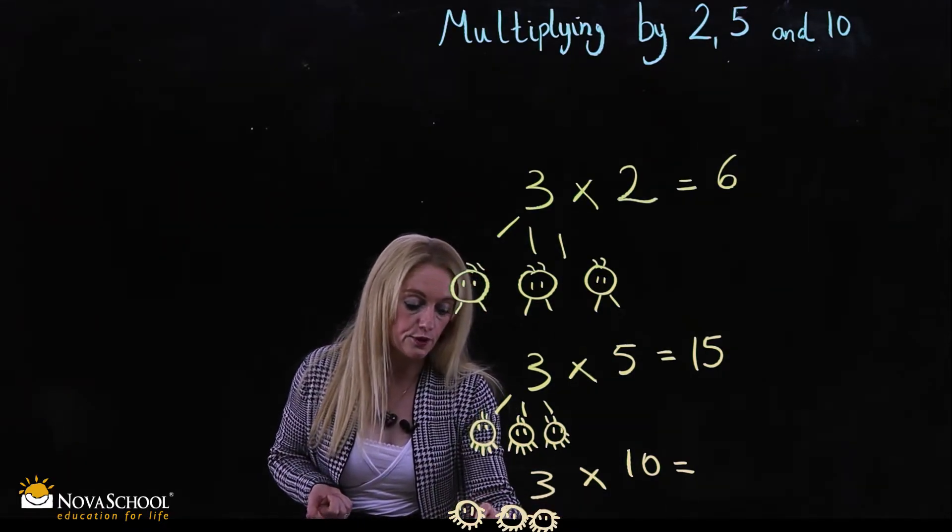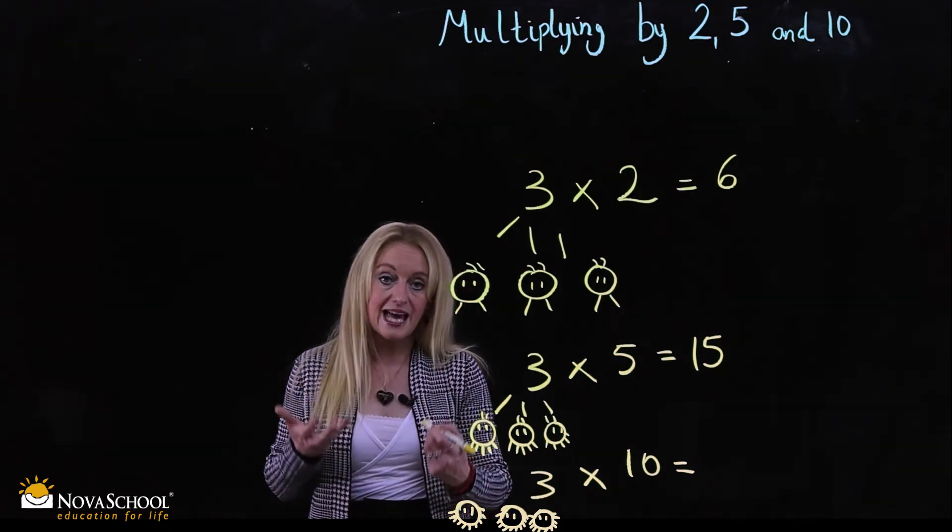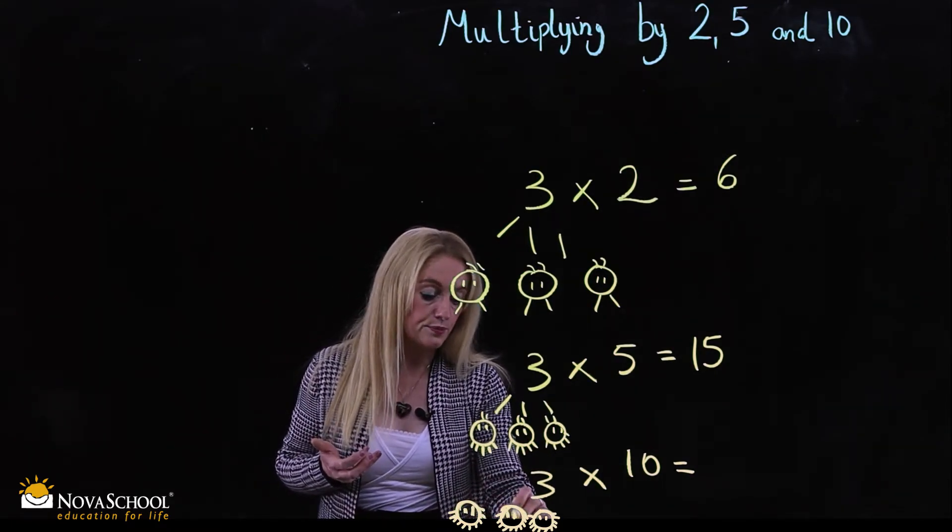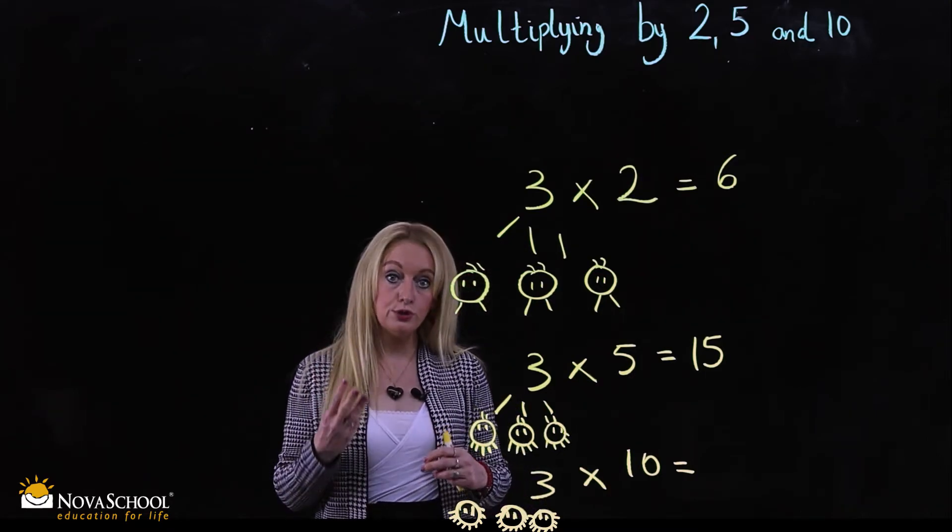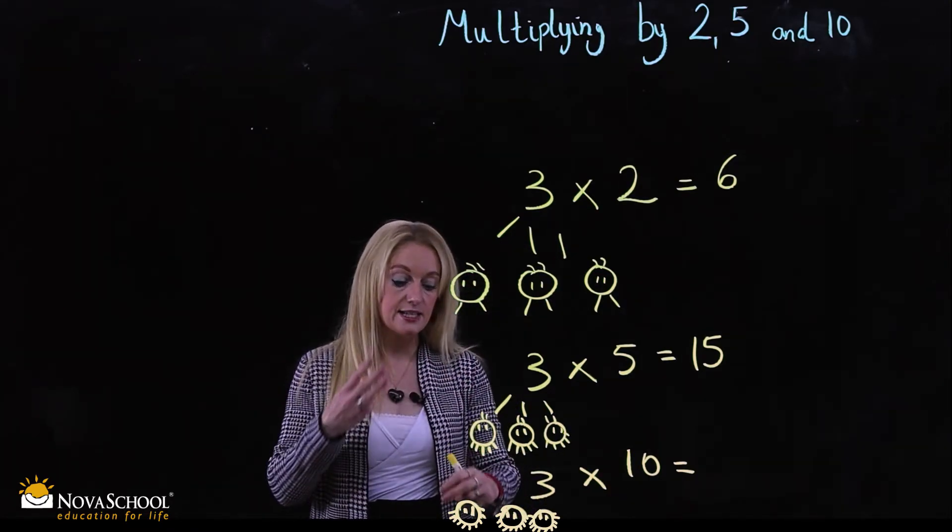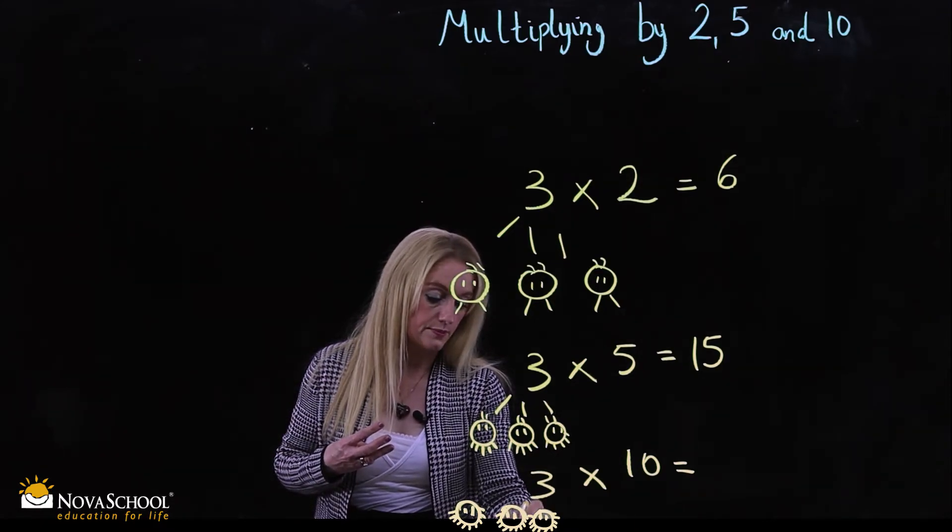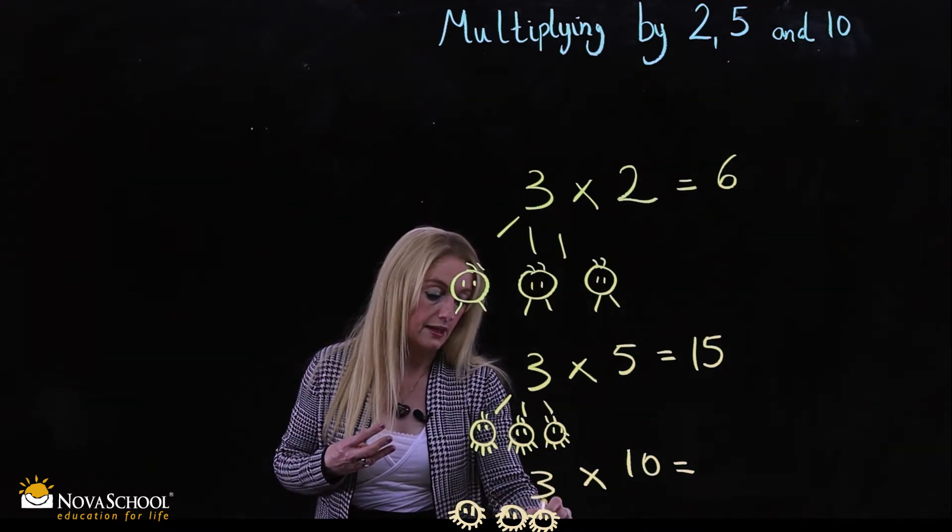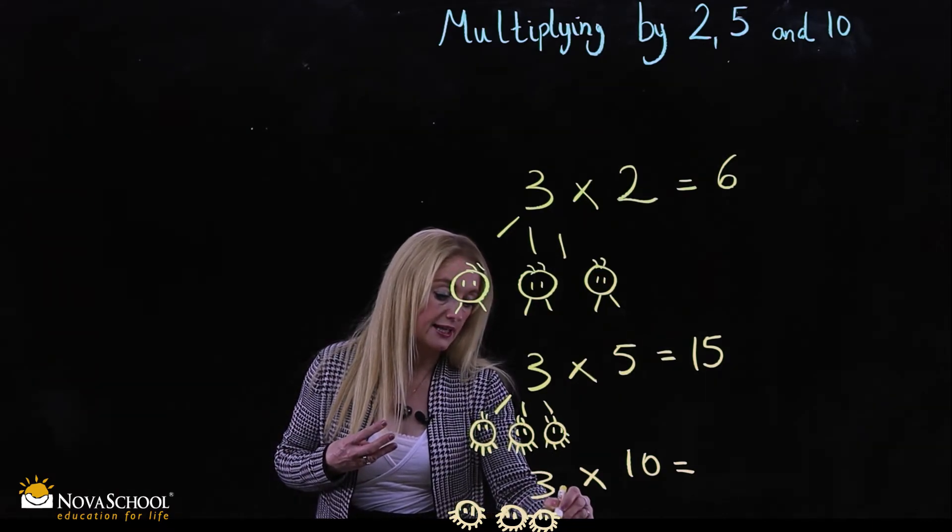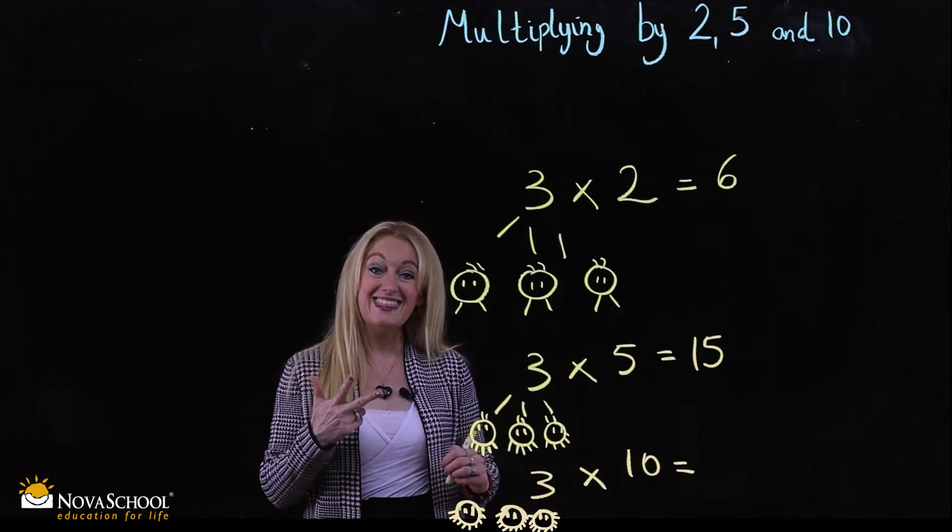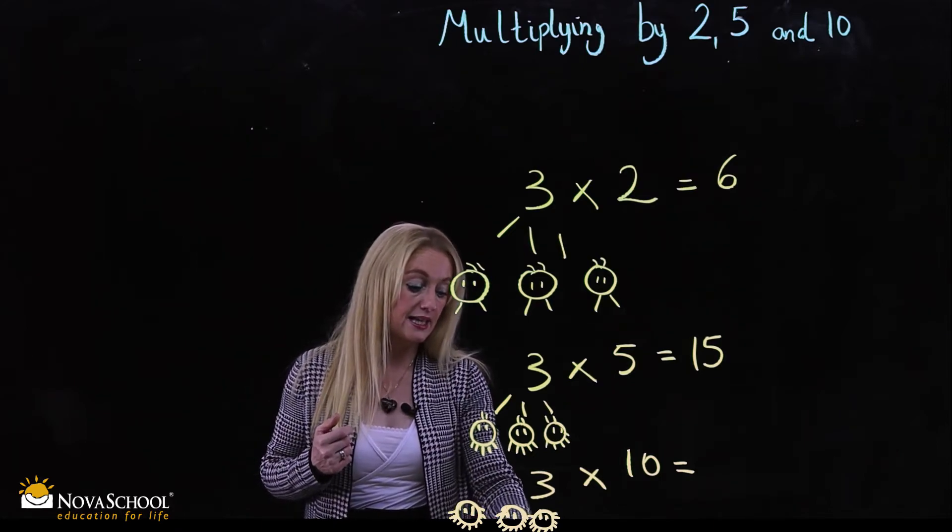They have ten legs. So three groups of ten: 10, 20, 30.